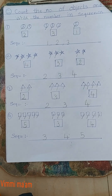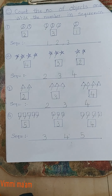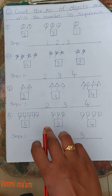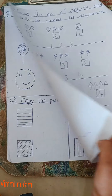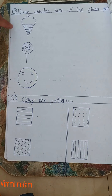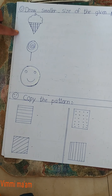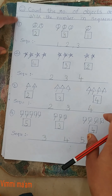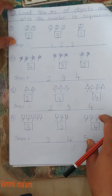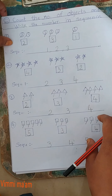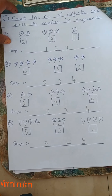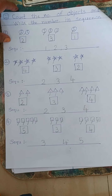So, understand children? So you also do this activity in your worksheet number — sorry, three, six, thirty-six — at your home. So thank you. Bye, take care. Bye.